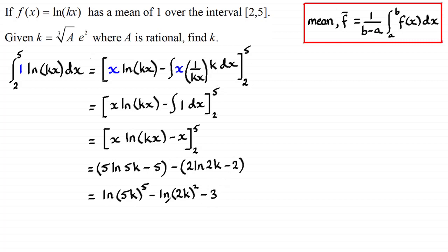And then I'm going to use the subtraction rule for logs. Here we can replace this by a division. So we get the natural log of 3125 k to the power 5. That's 5 to the power 5 is 3125. And that's over 4k squared, the result of 2k all squared.